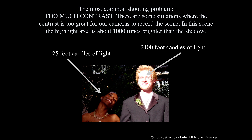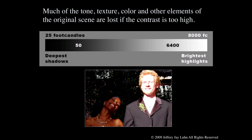There are a lot of situations where the contrast is too great for our cameras to record the scene. In this scene, the highlight area is about a thousand times brighter than the shadow. The best man at my daughter's wedding was from Ireland, so he's got very pale skin and he's in the sun. A bridesmaid is Black and she's in the shadow — she has about 25 foot candles of light on her, and he has about 2,400 foot candles on him. There is no way you'll be able to get both of them with the proper exposure.